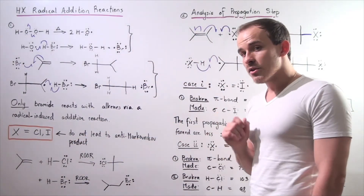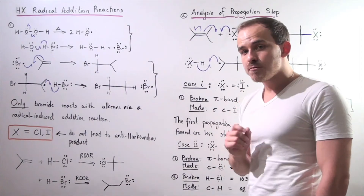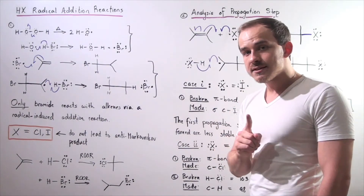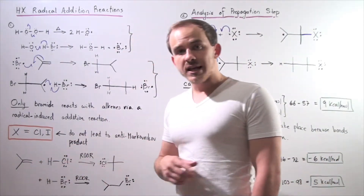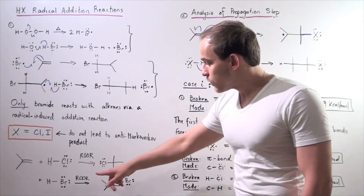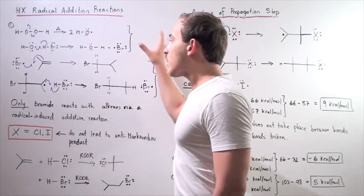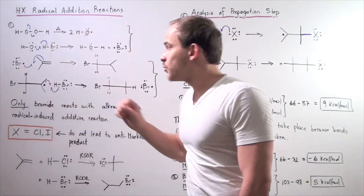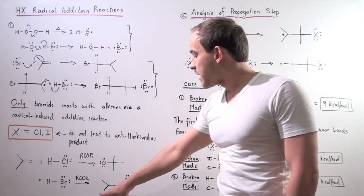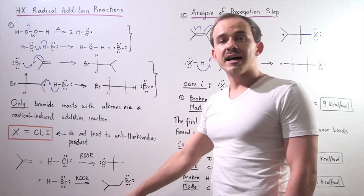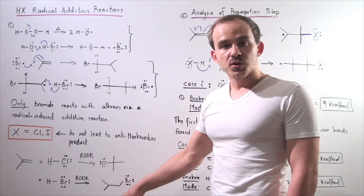On the other hand, if we take HBr and mix it with the same alkene in the presence of peroxide, the radical reaction will take place, forming the anti-Markovnikov product.